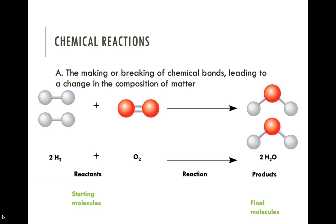A chemical reaction is simply the making or breaking of chemical bonds. When this happens, you get emergent properties — a change from individual atoms to a compound made up of multiple atoms. In this case, we have a really simple reaction: the formation of water from hydrogen and oxygen. We start with two molecules of hydrogen — those silver balls and bars — two hydrogen atoms bonded together.